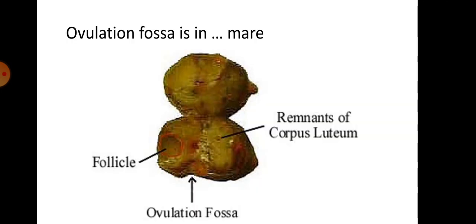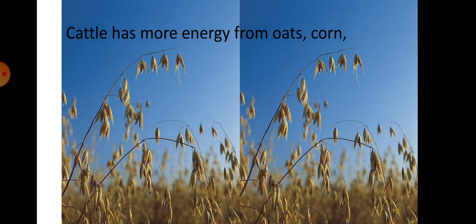Ovulation fossa is present in a mare. A photo shows the ovary with follicle, ovulation fossa, and remnants of corpus luteum. Regarding energy in feed, corn has more energy than oats; oats is the beneficial grain for horses, while corn is the beneficial grain for cattle.